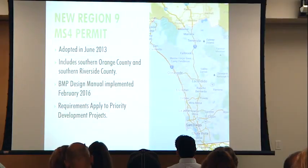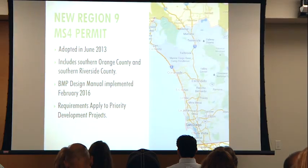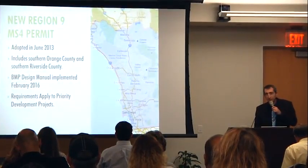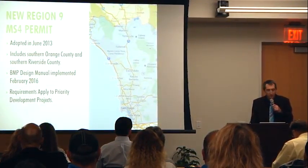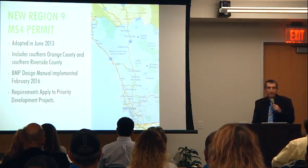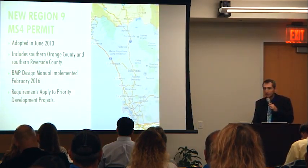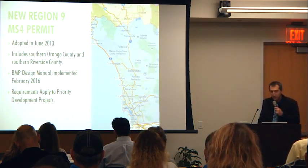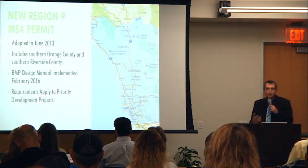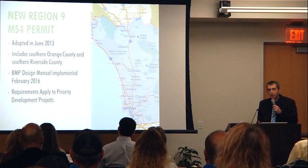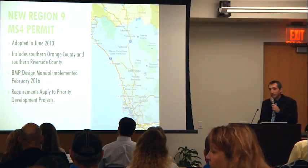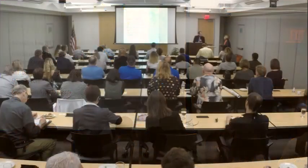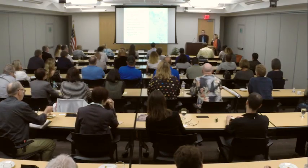The stormwater permit, or MS4 permit, is issued by the Regional Water Quality Control Board. The state of California is split into regional boards; we're in Region 9, which covers most of San Diego County — from the ridgeline of the mountains to the west — as well as portions of southern Orange County and southern Riverside County. MS4 stands for Municipal Separate Storm Sewer Systems, and it's the permit the regional board issues to the county and cities, allowing them to discharge from their municipal stormwater systems into the waters of the state.